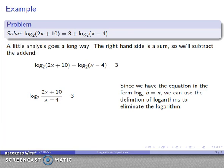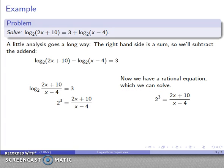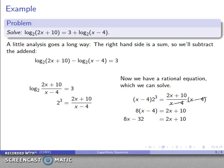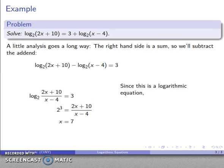And so my definition of logs, log to base a of b is equal to n, tells me that a, the base, to the log is equal to the argument. So I have 2 to the power of 3 is equal to 2x plus 10 over x minus 4. And I have a rational equation which I can now solve. And solving my rational equation, I get a solution x equals 7.